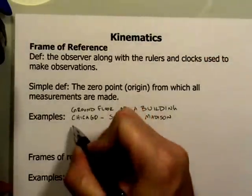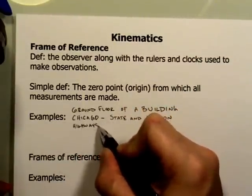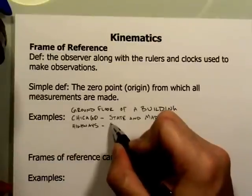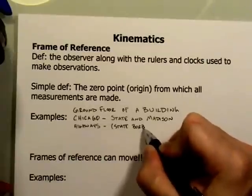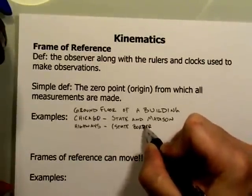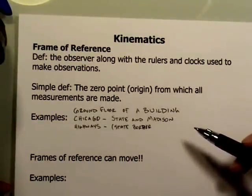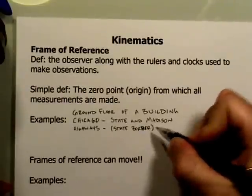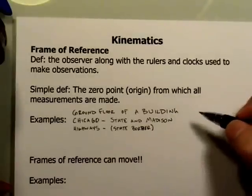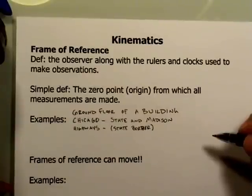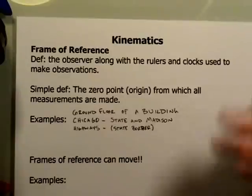Highways also have a frame of reference, and for highways it's typically the state border. On Interstate 80, passing from Indiana to Illinois, the mile numbers either start over or count up or down. One of the state borders — either eastern or western — represents zero, and miles are counted going one way or the other. So the border represents the frame of reference, or origin, within that state.